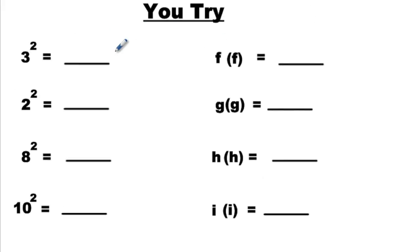Go ahead. Try these examples. Pause the video. I'm going to just write them down now. Assuming you've unpaused it. You should have written 9, 4, 64, not 16, 64, 8 times 8. And 10 times 10, that's clearly 100. On the other side, you should have written F to the power of 2 or F squared, G squared, H squared. And guess what? I times I is I squared.